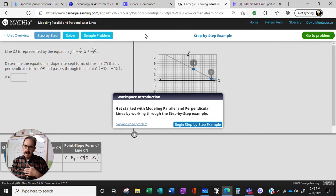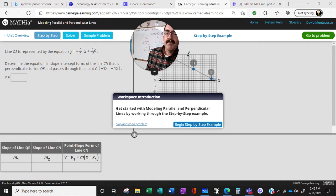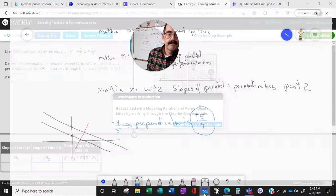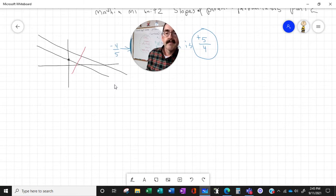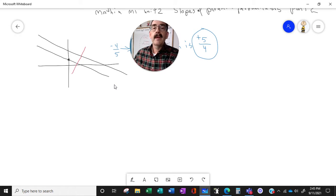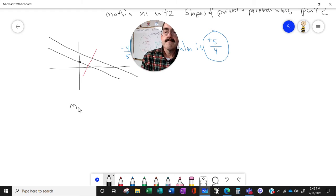Hey everybody, it's Monty and we're back on Mathia. This time we actually have to do some memorizing of equations. In this part we have what's called the slope intercept form. So let's write that out. We're in Mathia, Module 1, Unit 2, Part 3.